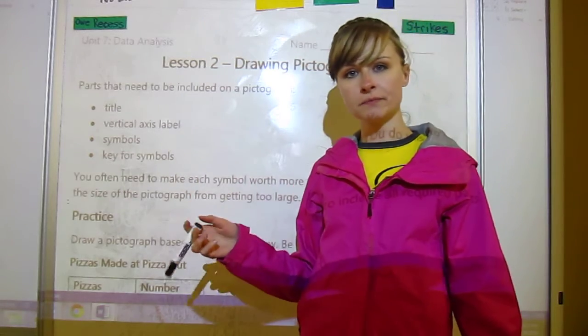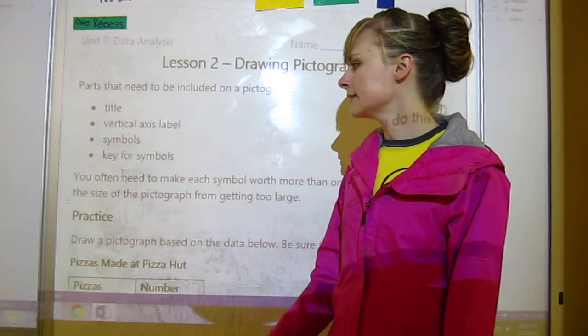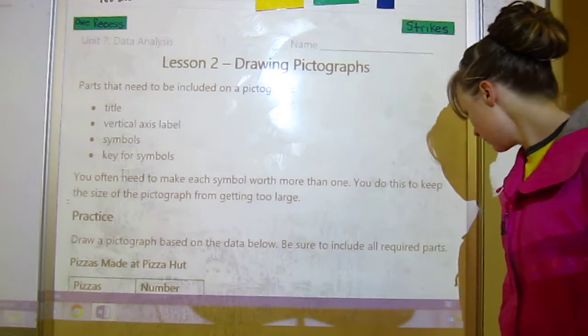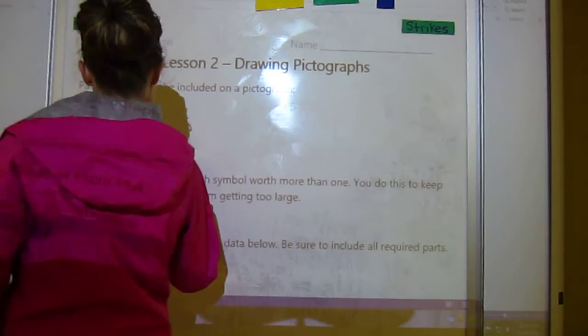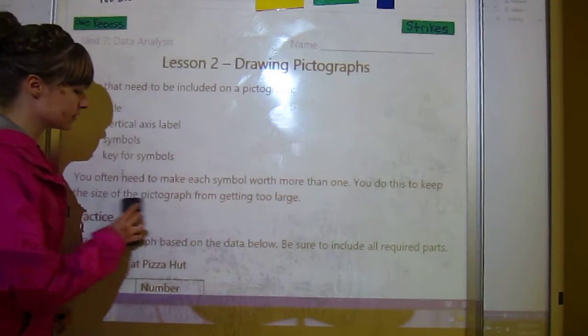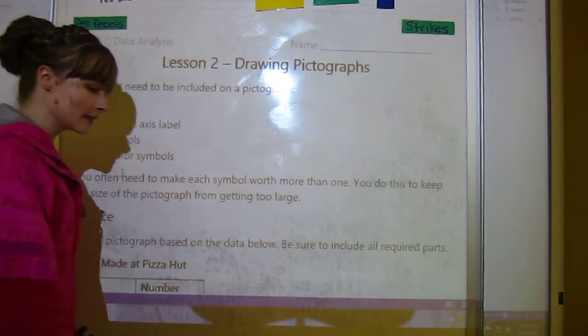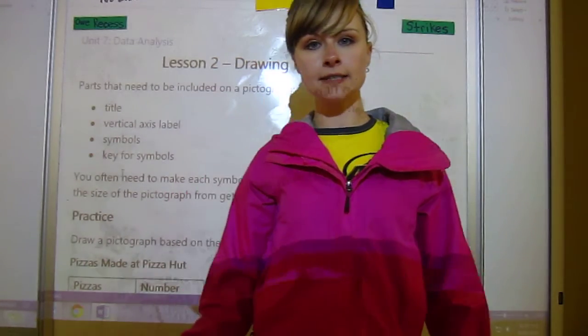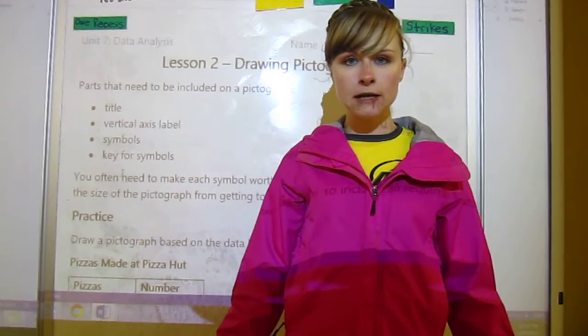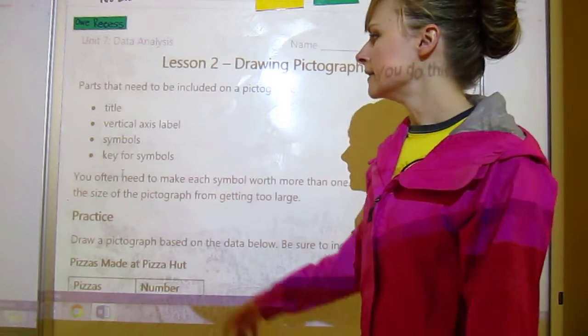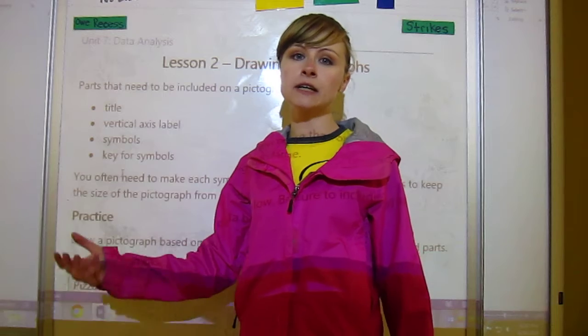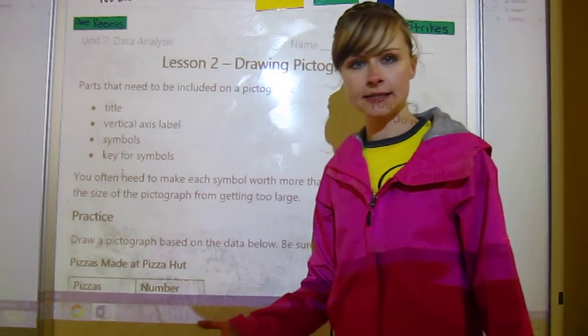You often need to make each symbol worth more than one. For example, from the last lesson, if somebody sold 16 ice cream cones, you wouldn't really want to draw 16 ice cream cones. Maybe you want to draw four ice cream cones and make each ice cream cone worth more.